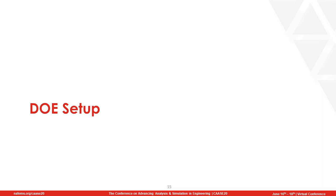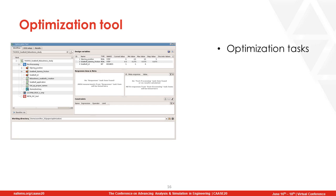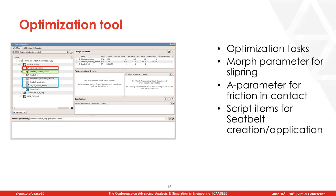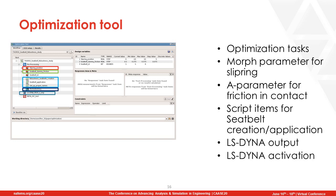After defining the design variables, it is time to set up the DOE study. The DOE setup will be done from the optimization tool of ANZA. An optimization task will run to change the morph parameter for the slip ring height, to change the A parameter for the friction in the seatbelt-dummy contact, and to run the scripts that create the seatbelt. Finally, it will output an LS-Dyna file and call LS-Dyna to solve the results.